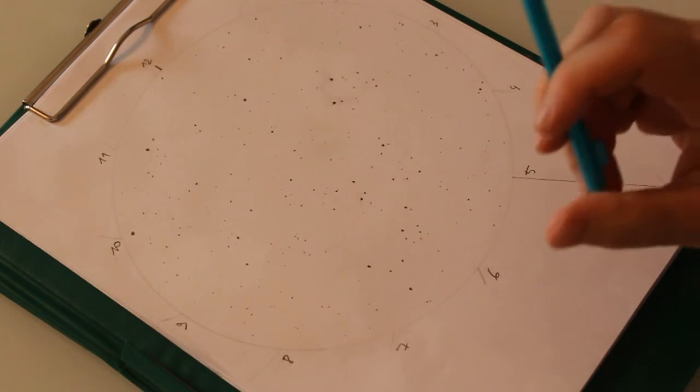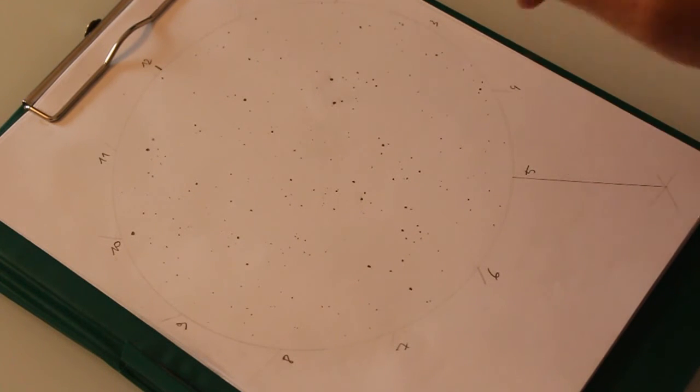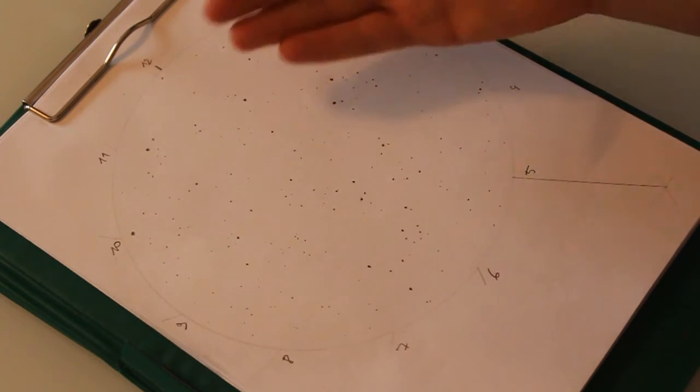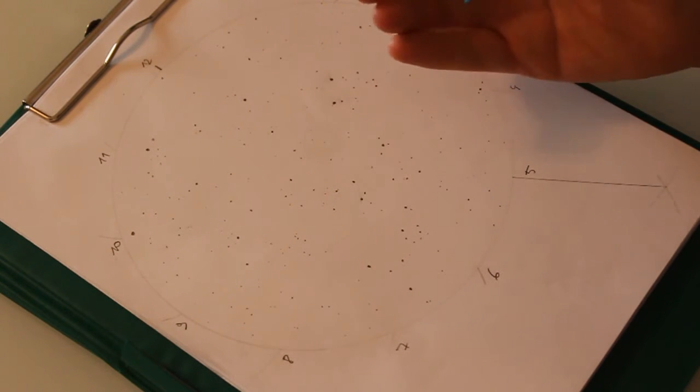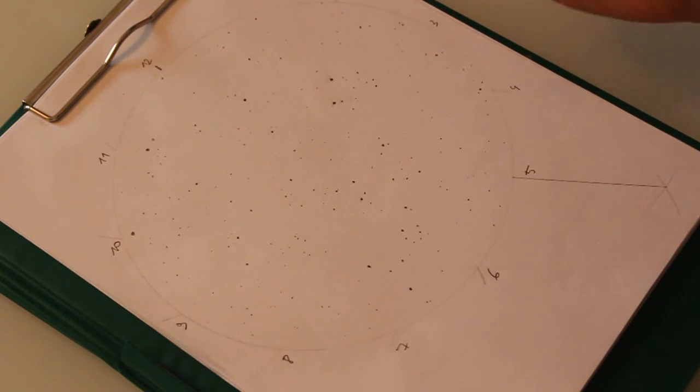First, we're going to draw the contours. And the background stars are, of course, of great help to determine where exactly the contours of the object are. So, let's start.